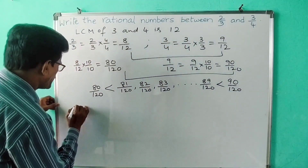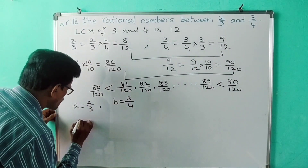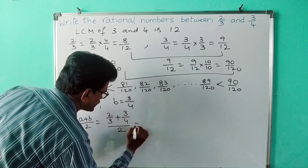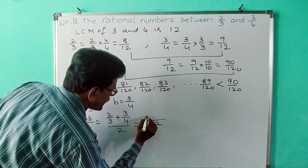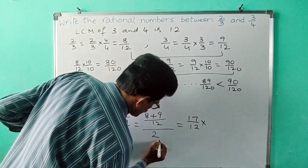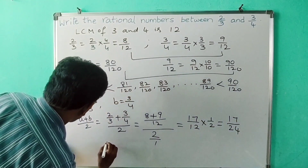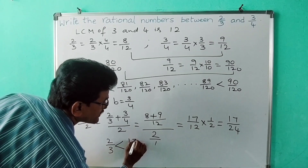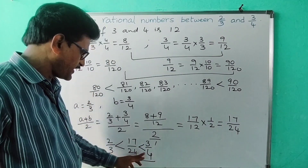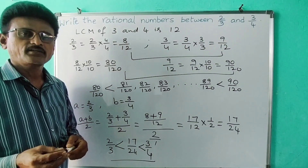Now I will solve this using the mean method. Taking a as two by three and b as three by four, the rational number between them is a plus b by two. LCM of three and four is twelve: four times two is eight, plus three times three which is nine, gives seventeen by twelve. Dividing by two gives seventeen by twenty-four. So seventeen by twenty-four lies exactly between two by three and three by four — it is the mean of these two rational numbers. If you like my videos, please share, comment, and subscribe to my channel. Thank you.